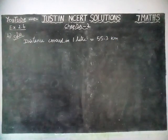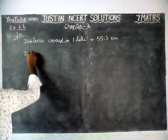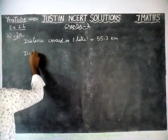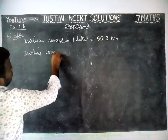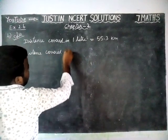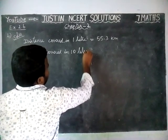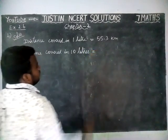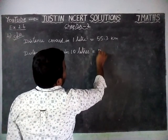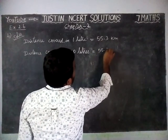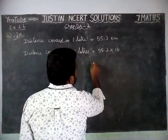Now we have to find distance covered in 10 litres. Already for 1 litre it is 55.3, so 55.3 km multiplied by 10 litres of petrol.